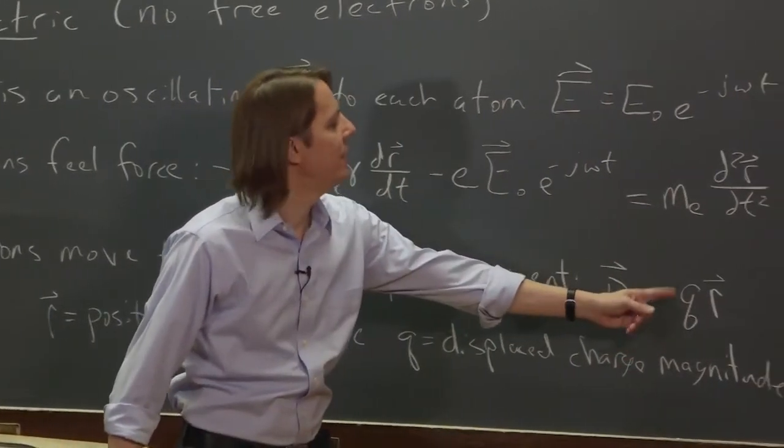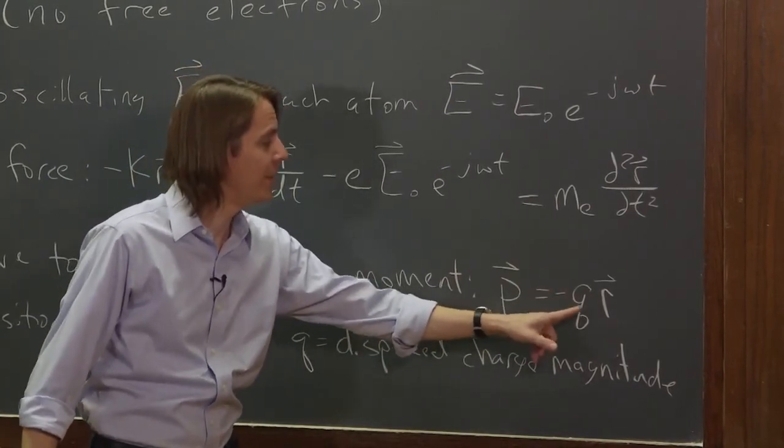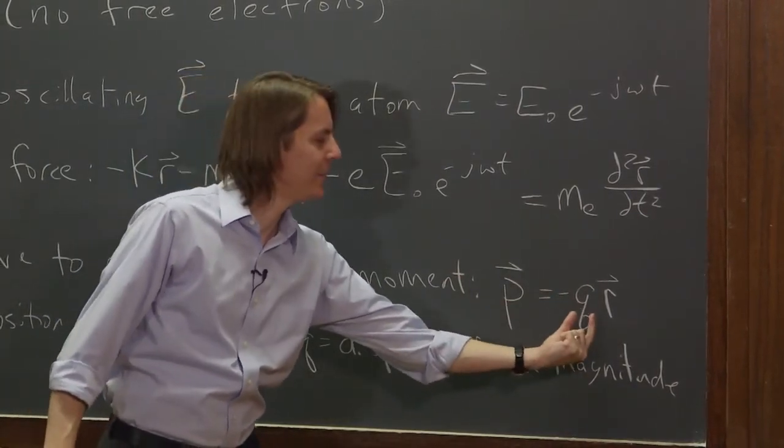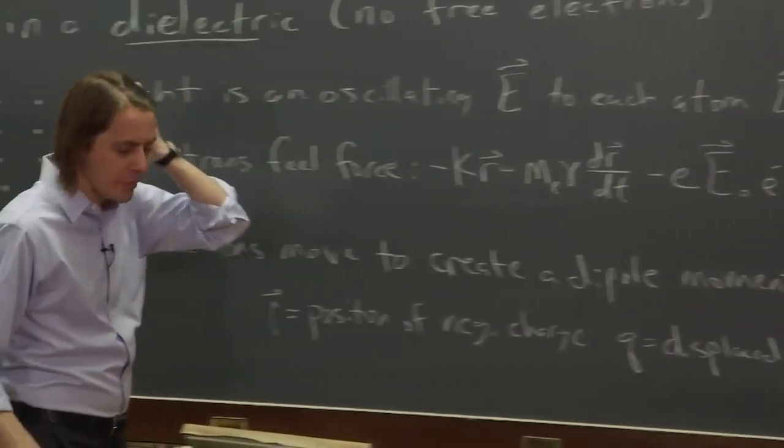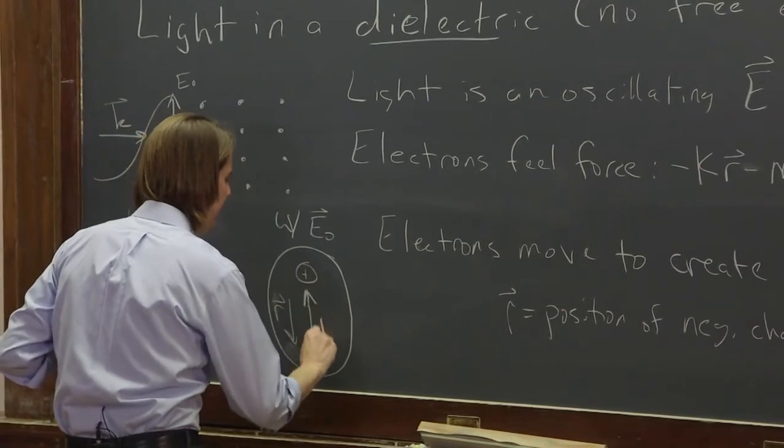And then we have to define Q as the displaced charge magnitude, also important. So you don't put negative E here. You don't put a negative fundamental unit of charge here and have yet another negative to keep up with. This is the magnitude of the displaced charge.